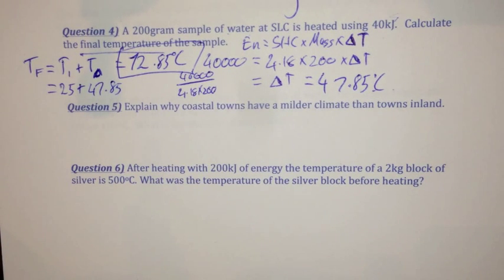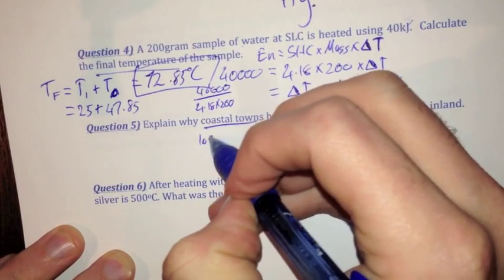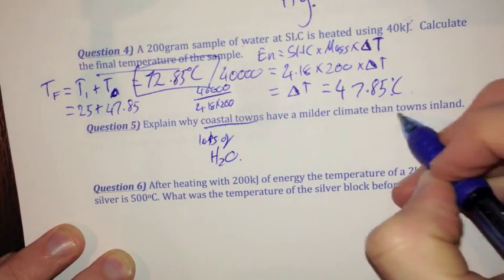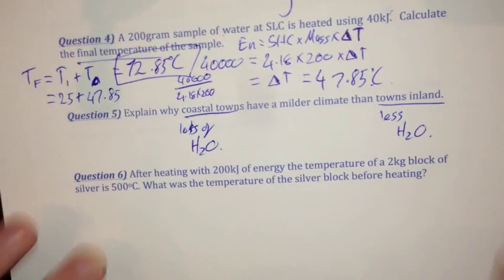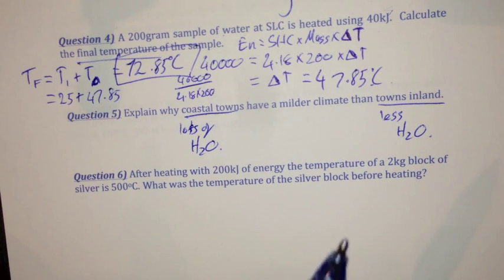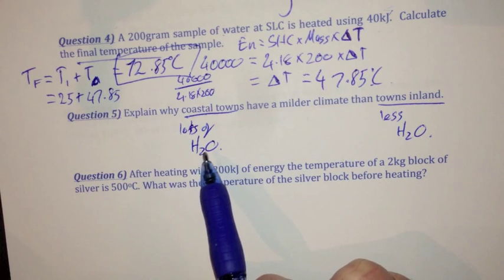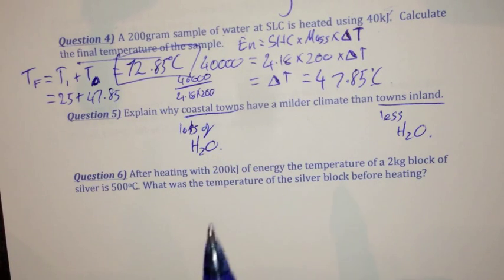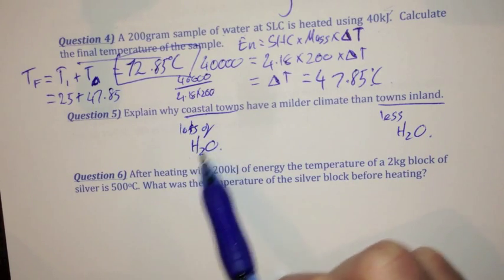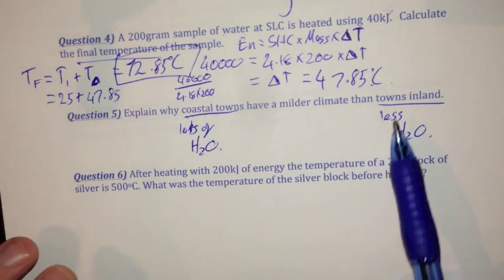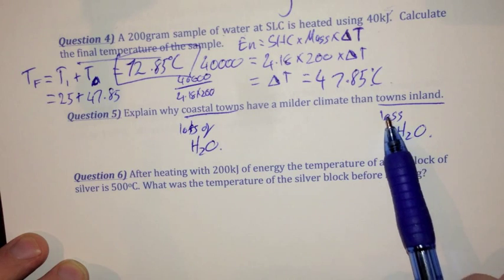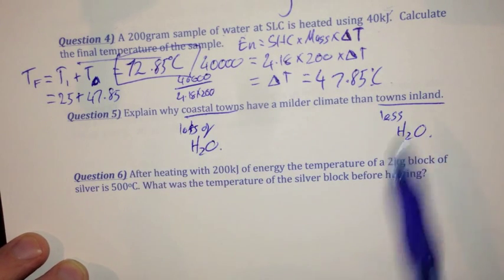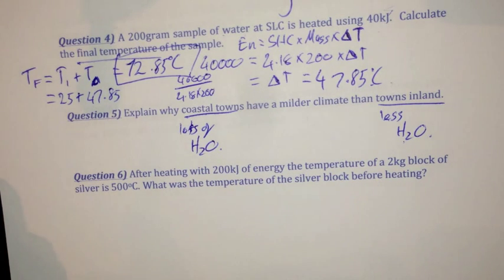Question five is an explanation question: explain why coastal towns have a milder climate than inland towns. Coastal towns have lots of water, and inland towns have less water around them. Water has a high specific heat capacity compared to other things, and therefore has the ability to retain heat better. So coastal towns, which have lots of water, can retain heat better than inland towns which have less water and less ability to retain heat.